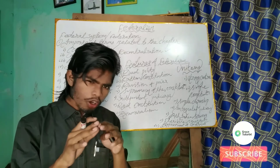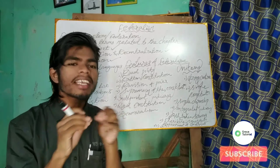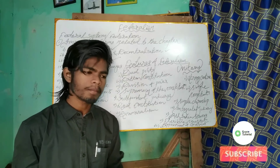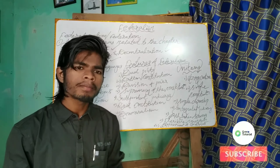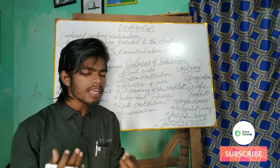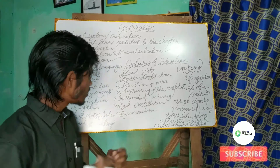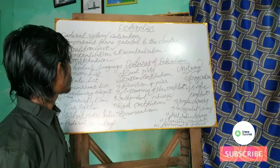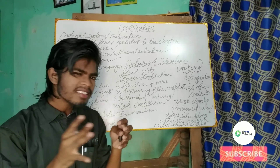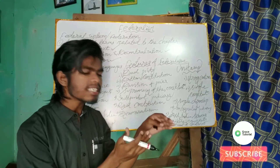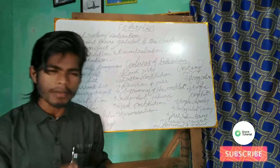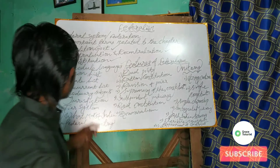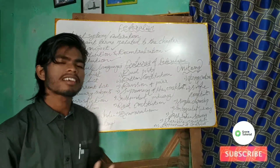The constitution is the supreme law of the country which reflects the fundamental principles on which the government of the country is based. Next, scheduled languages: a language which is mentioned in the Schedule of the Indian Constitution is basically called a scheduled language. Let us discuss one more important term — the union list. The union list is basically a list in which certain subjects are included in which the central government can make laws.